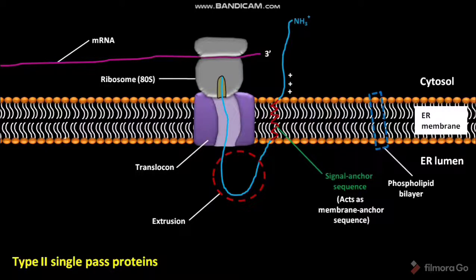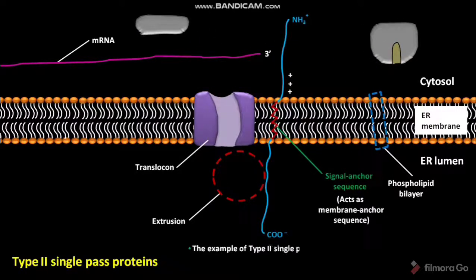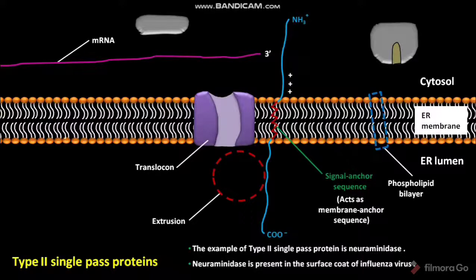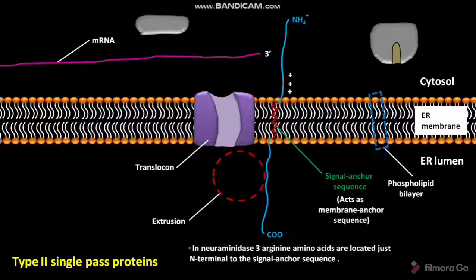Once protein synthesis is completed, the C-terminus of the polypeptide chain is released into the ER lumen, and the ribosomal subunits are released into the cytosol. An example of a type II single-pass protein is neuraminidase, present on the surface coat of influenza virus. In neuraminidase, three arginine amino acids are located just N-terminal to the signal anchor sequence.